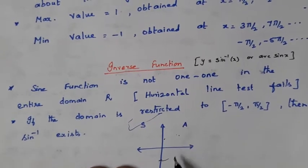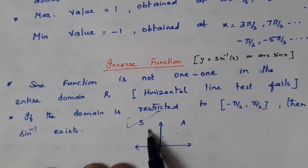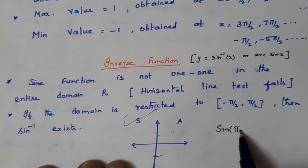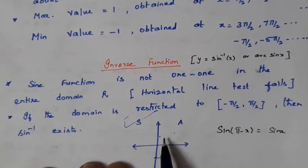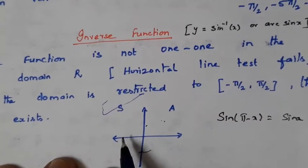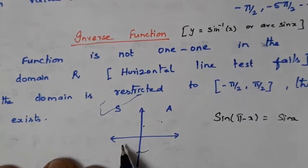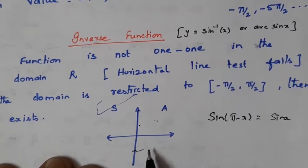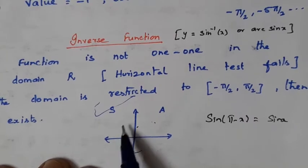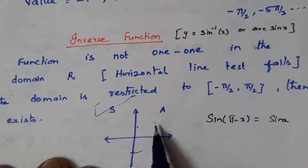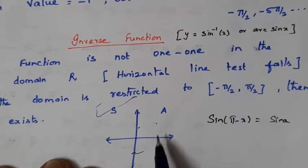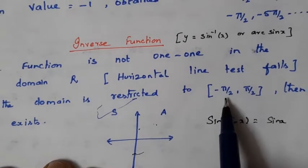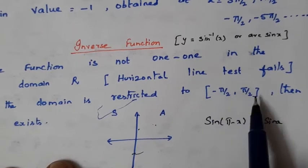We take the angles in the first and fourth quadrants — that is, 0 to π/2 and 0 to −π/2, making the interval −π/2 to +π/2. If we take angles in the second quadrant, sine(π − x) = sine x, so the same value gets repeated. Similarly, angles in the third quadrant equal negative angles in the fourth quadrant. Therefore, we take only angles in the first and fourth quadrants, which do not repeat. The domain for sine inverse is the closed interval −π/2 to π/2.